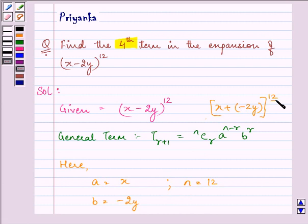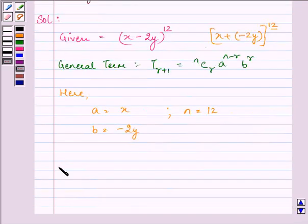Now, here we need to find the fourth term in the binomial expression (x - 2y)^12. So the fourth term will be written as T_{3+1}. That means here, r equals 3.